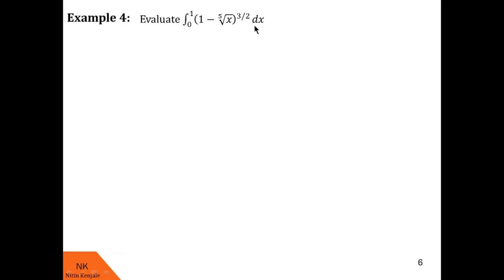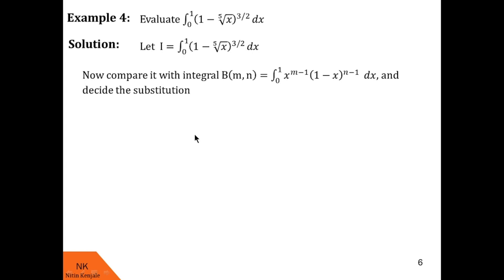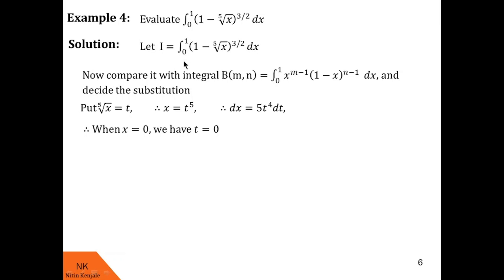In the fourth example, we evaluate the integral of 1 minus the fifth root of x, raised to 3 by 2, dx over the limit 0 to 1. We label it as i and compare with the beta definition. After comparison, we see that the fifth root of x should be taken as t. So we put the fifth root of x equal to t, giving x equals t raised to 5 and dx equals 5t raised to 4 dt. When x is 0, t is 0; when x is 1, t is also 1, so the limits remain unchanged.